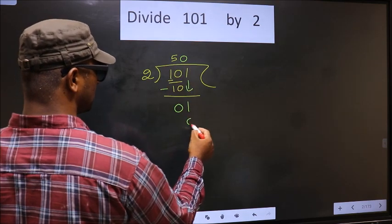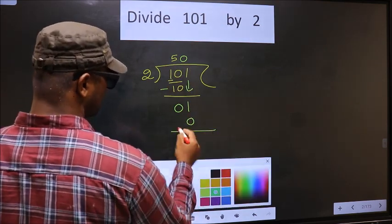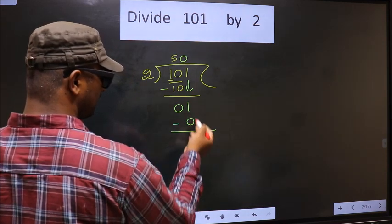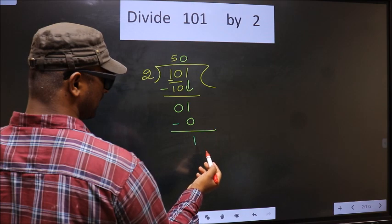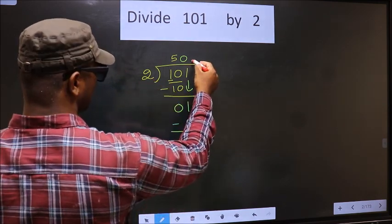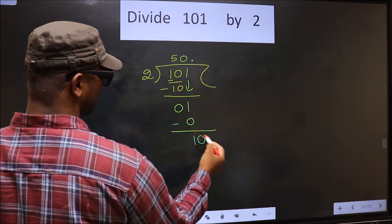So 2 into 0, 0. Now you subtract. 1 minus 0, 1. Over here, we did not bring any number down. 1. And 1 is smaller than 2. So now you can put a dot and take 0 here.